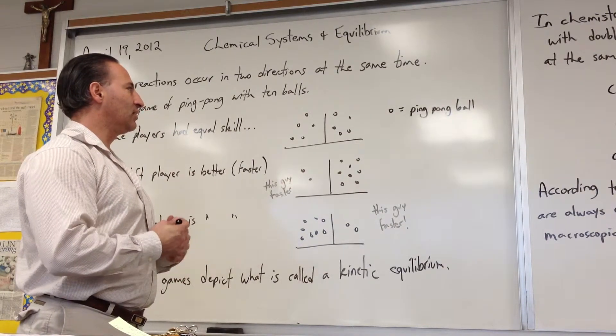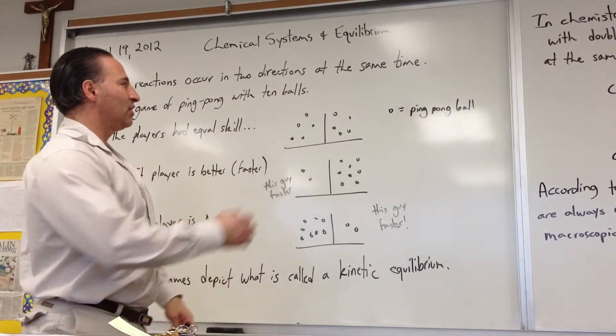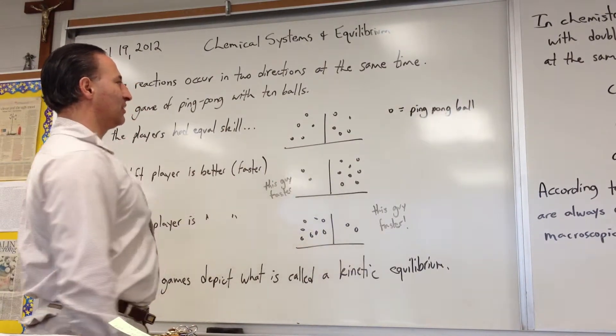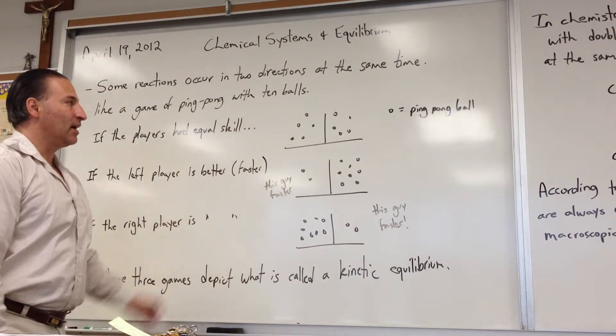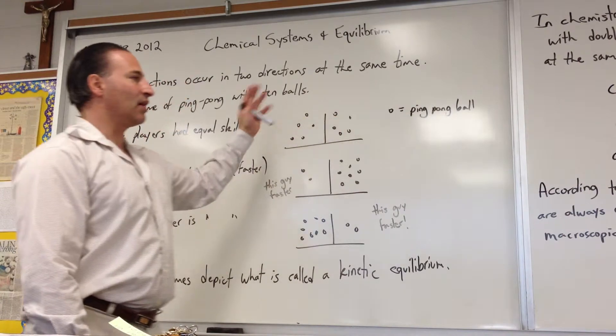You could have a rate of five balls per second going from left to right, and five balls per second going from right to left. But in the end, if you took a snapshot at any given moment, you would have five balls in one court and five balls in the other.